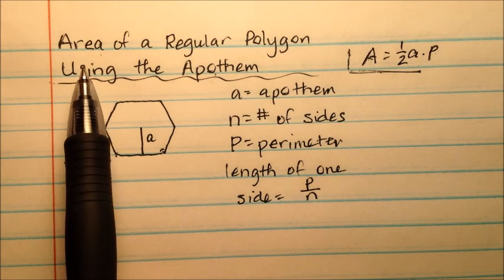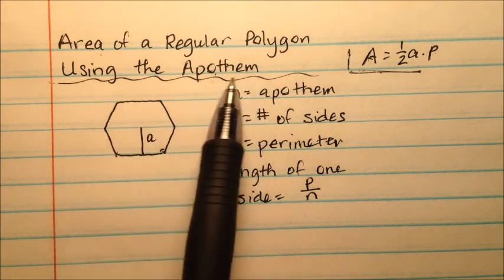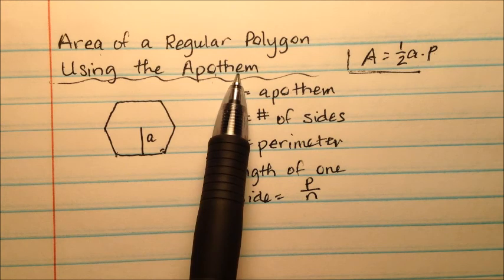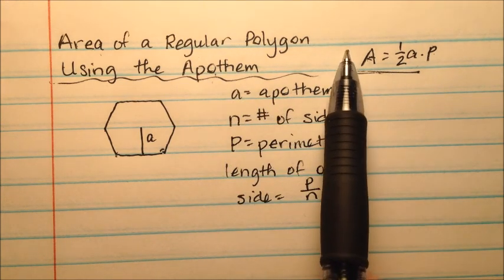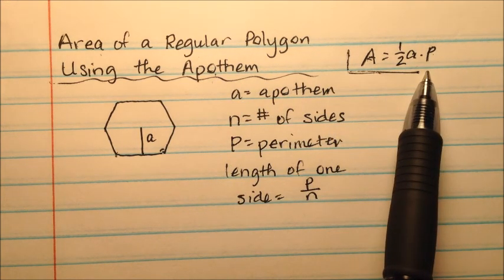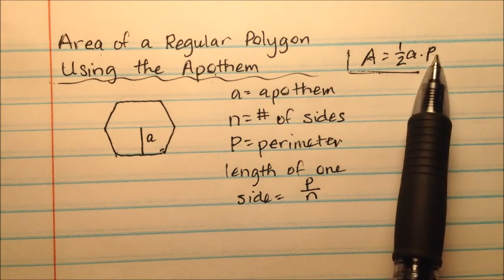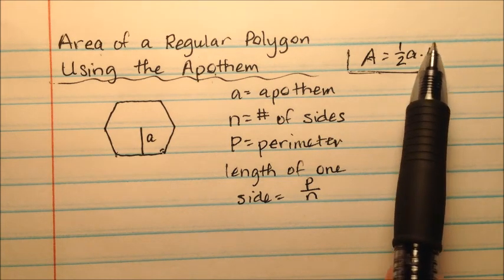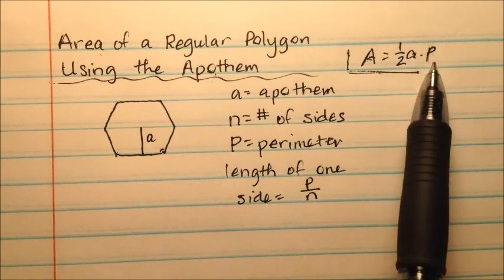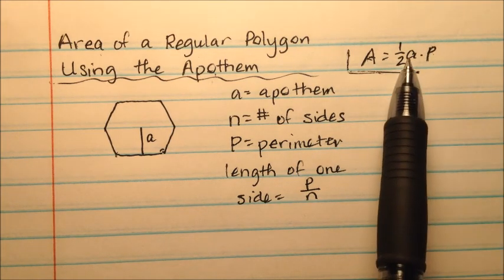In this video, I'm going to talk about finding the area of a regular polygon using only the apothem. Our normal formula to find the area of a regular polygon is one-half the apothem times the perimeter. But how could we change this a little bit to get rid of the perimeter and have only the apothem?